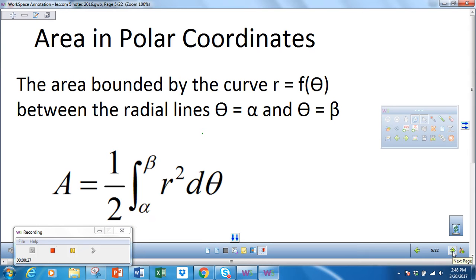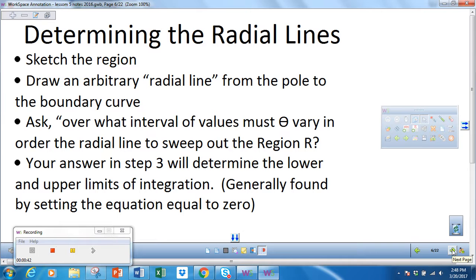In this unit, the most important thing is to know this formula: A equals one half the integral from a to b of r squared dθ. This is a fairly easy formula. The most difficult thing about this formula is to find your radial line.